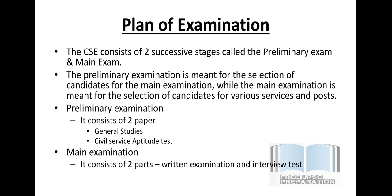The Mains Examination has two parts: a Written Examination and an Interview/Personality Test. In the Written Examination, there is one essay paper, four General Studies papers, and one optional subject with two papers. For example, if you chose Public Administration as your optional subject, you would have two papers for it. There is also one language paper of your choice. These marks collectively decide your merit.